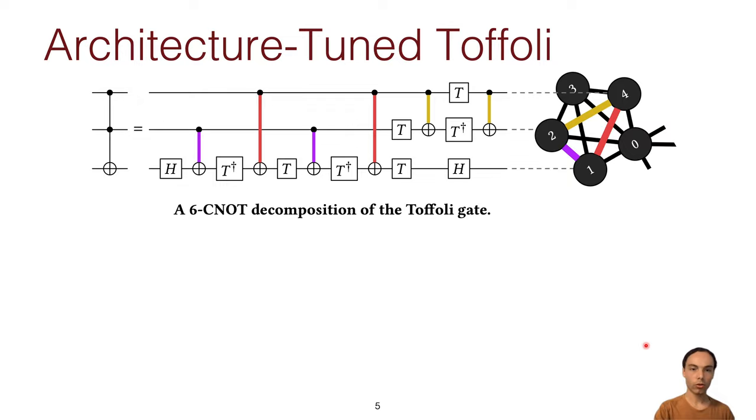So the way we do this architecture tuned in the second decompose pass is here's the typical six CNOT version, and you can see that it needs a CNOT between every pair of these three qubits. So if you have hardware that supports CNOTs between every pair of qubits, then you can execute it just fine, and you get a six CNOTs Toffoli.